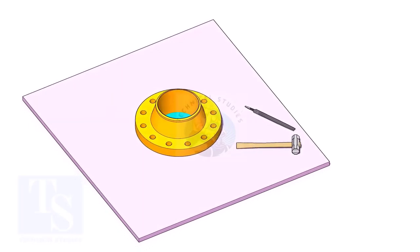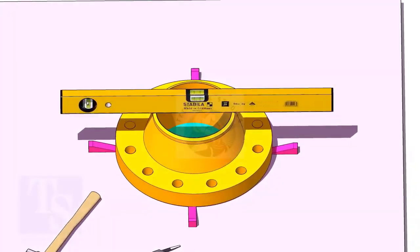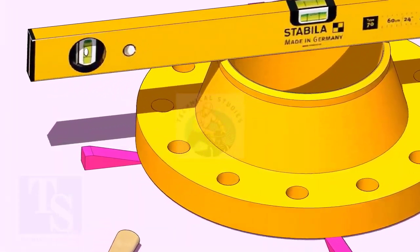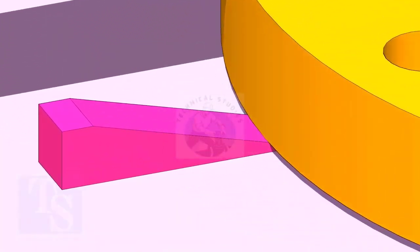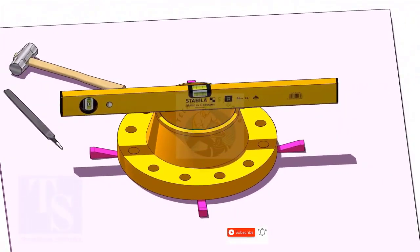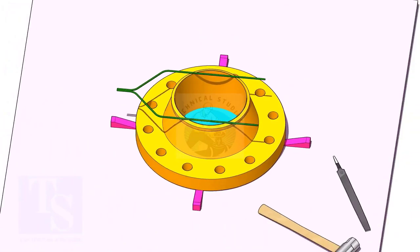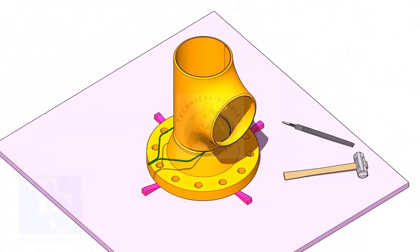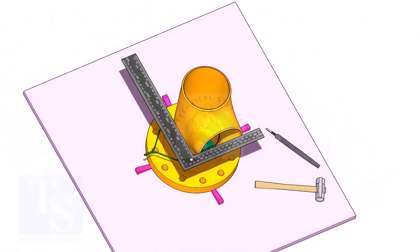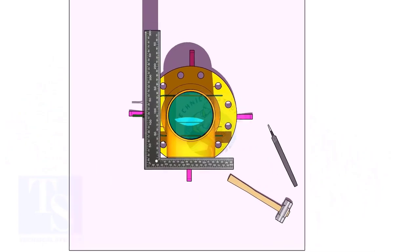Use small wedges to level the flange. Put the tee on the flange. Match the hole center of the flange and the tee face as shown.